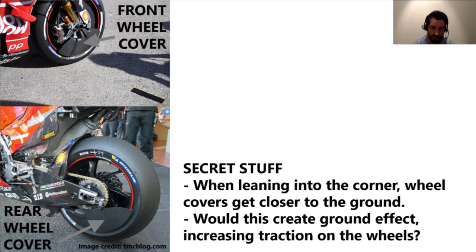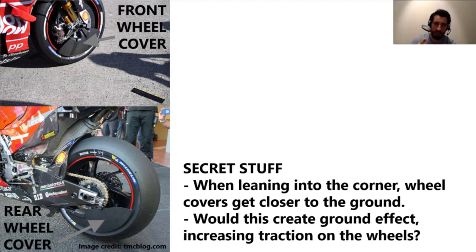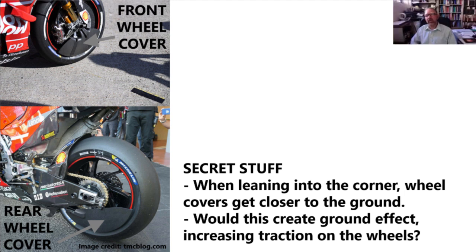And what about covering the front wheels? We saw some images of Ducati and probably other stories there too. Covering the wheels, like everywhere else, is going to reduce the drag. And with that surface under an angle, when you're going through a corner, if that surface gets closer to the ground, would there be some kind of ground effect acting on that surface, pulling the wheel down? Now we're going into an area which we tested and I'd rather not talk about it.